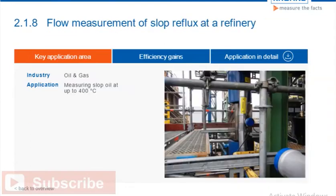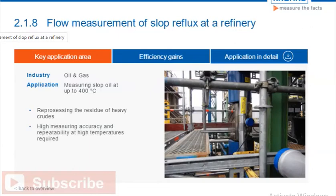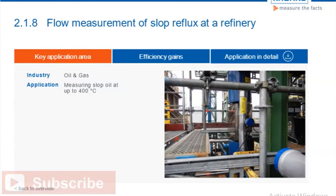A refinery produces specialty oils through the distillation of heavy crude oils. This includes the reprocessing of slop oil, which is a challenging medium since it is thick and viscous and must be measured at temperatures of up to plus 400 degrees Celsius. The challenge here is the accuracy and repeatability of the measurement at high temperatures.